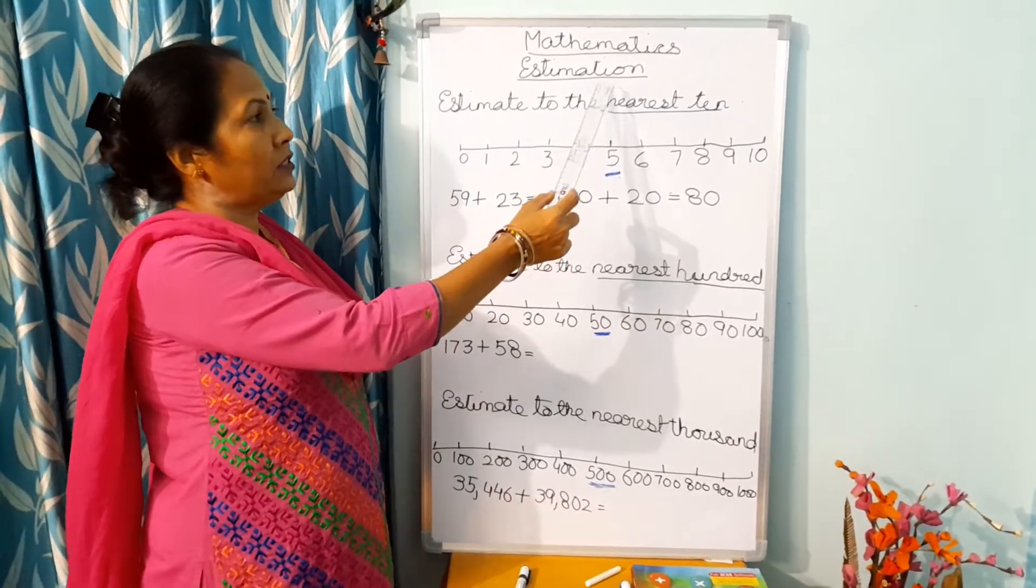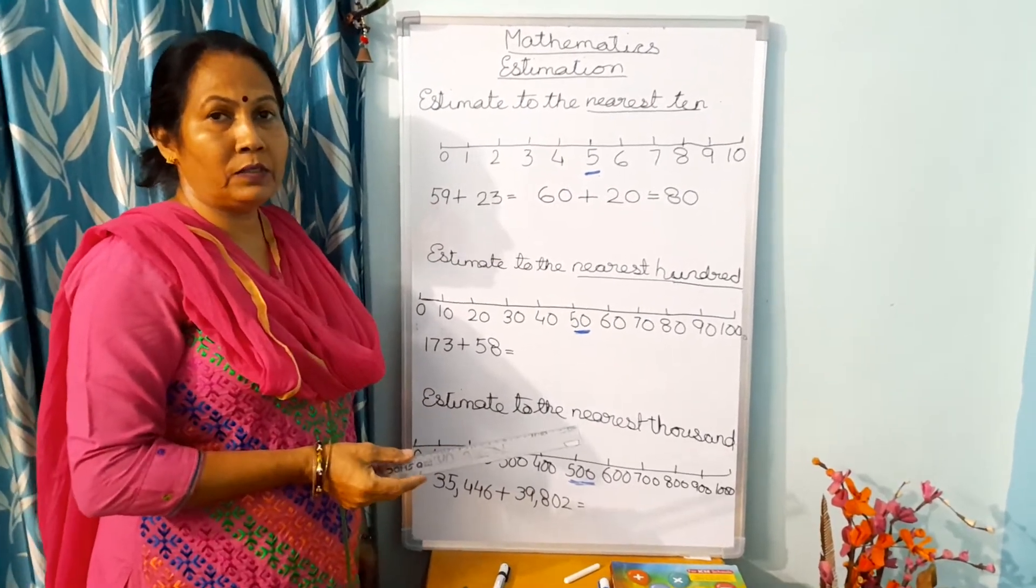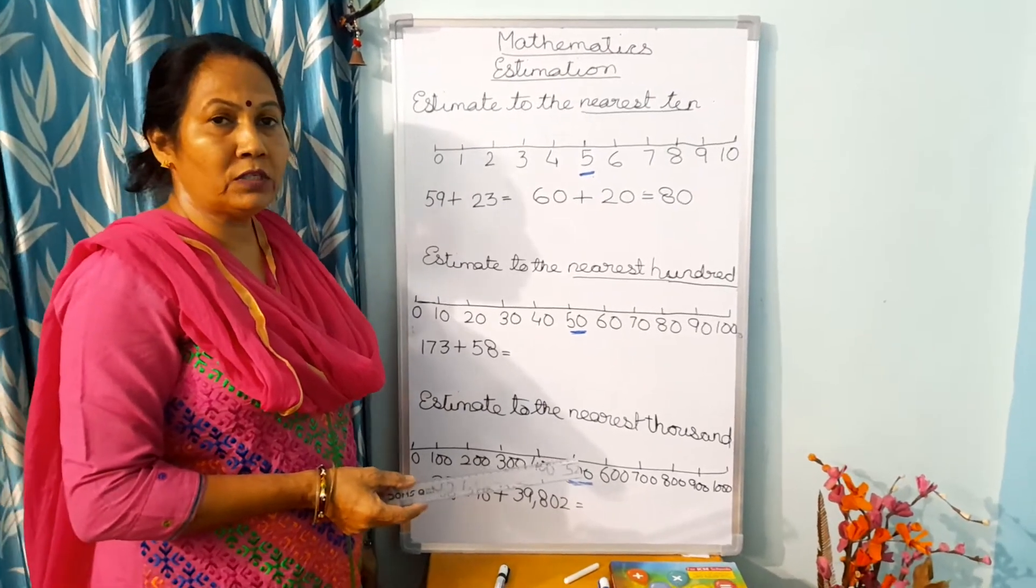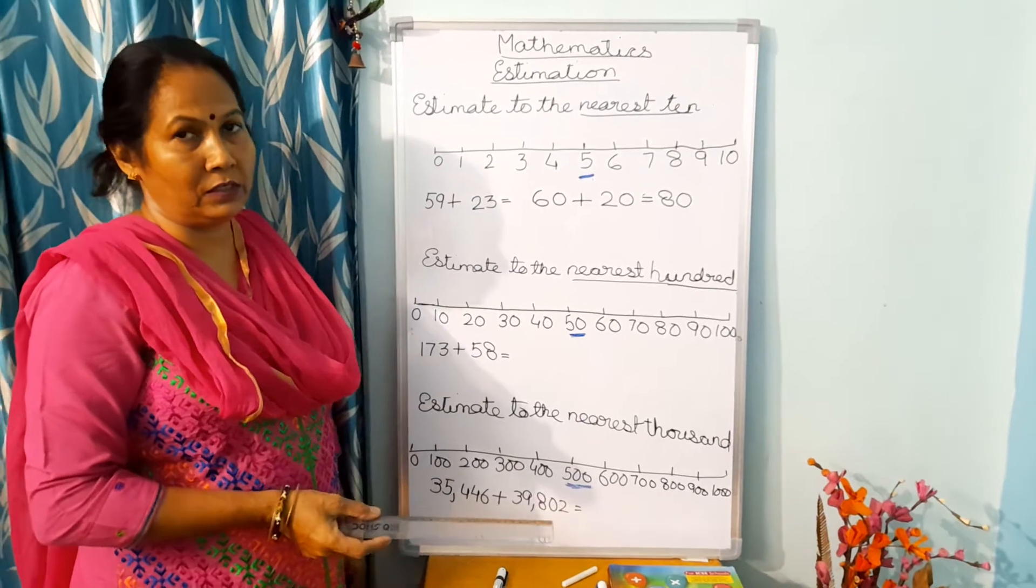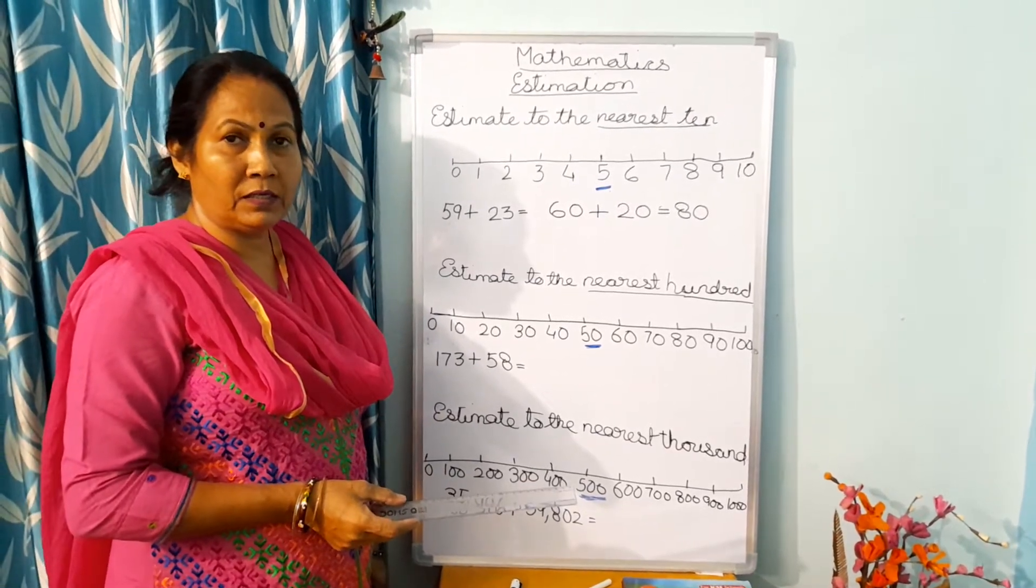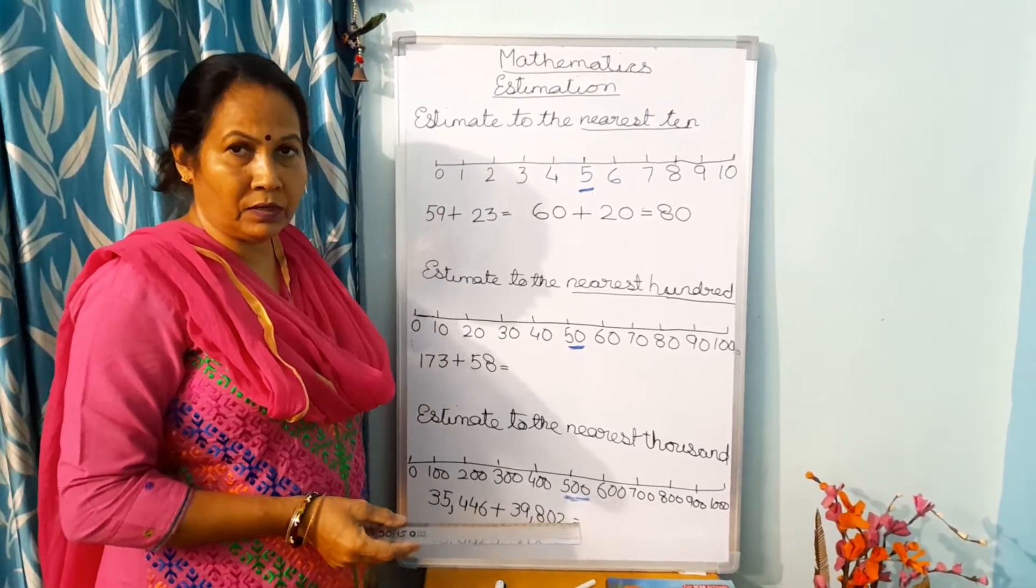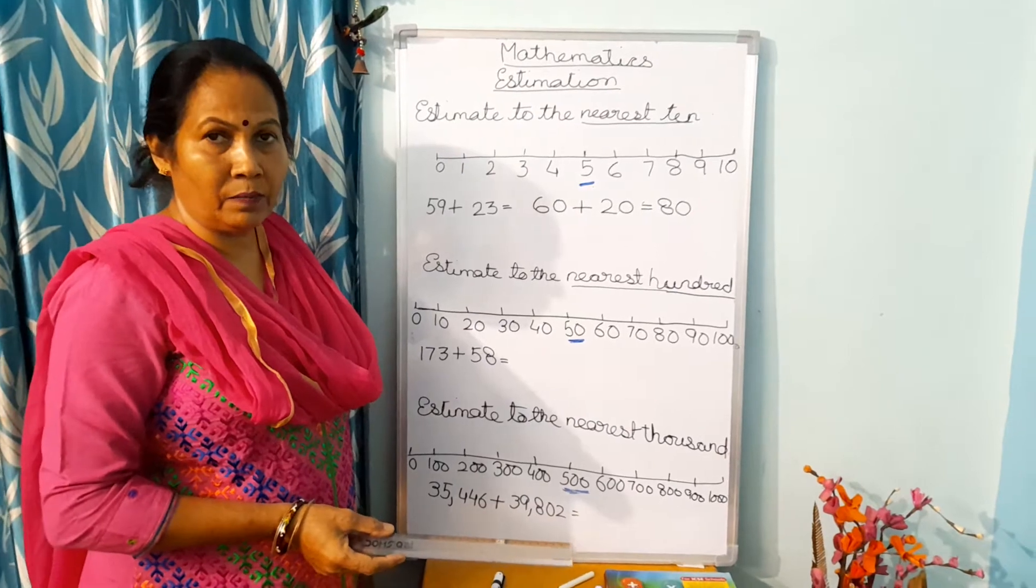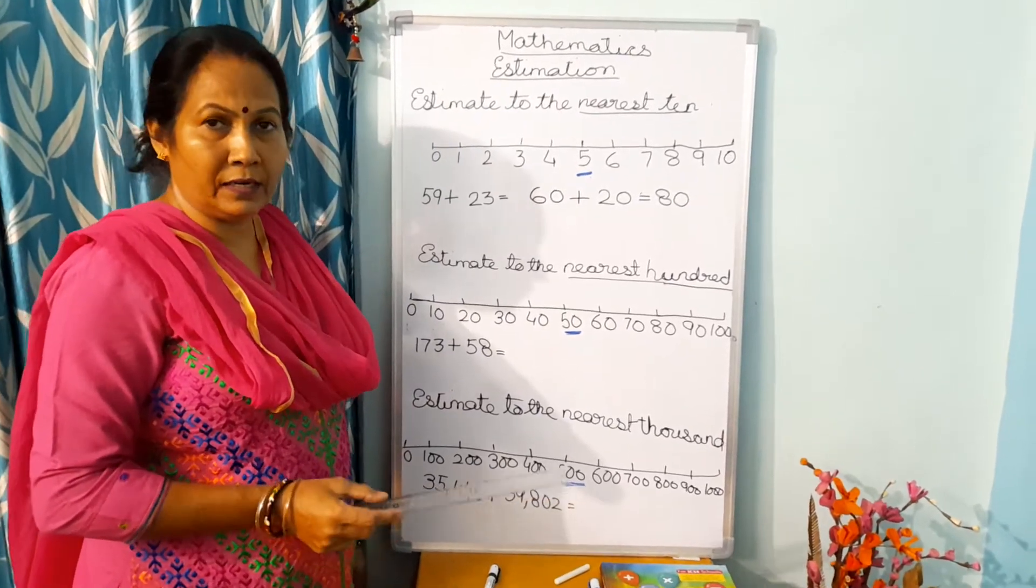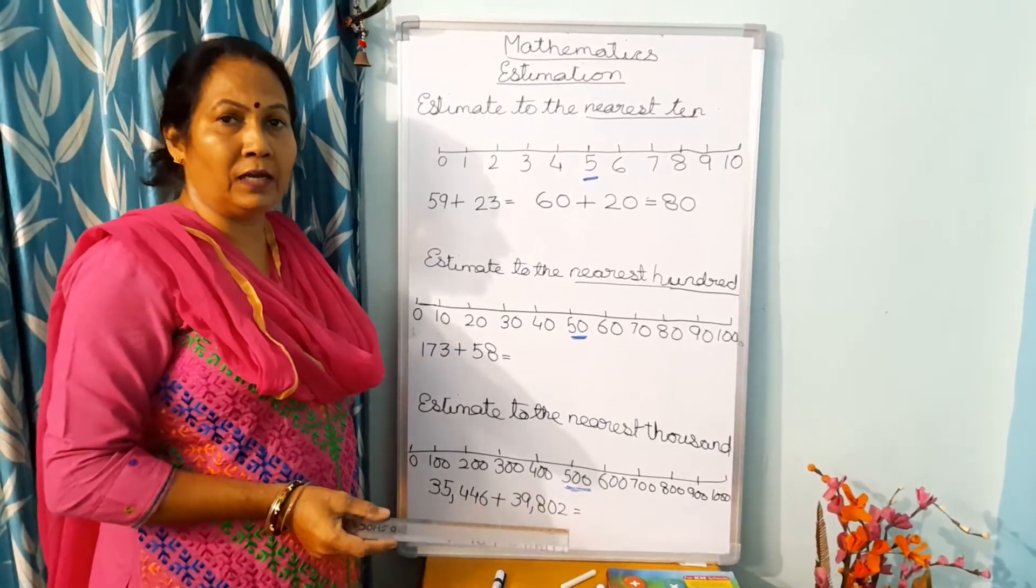Children, estimation is used in daily life. I will give you an example. Suppose you are going to celebrate your birthday and you decide with your parents that you have to call your friends. Now you estimate that you will call 10 friends. Maybe only 5 will come or 8 will come, but you decide that you will call at least 10 friends. So this is estimation. This is done in daily life.